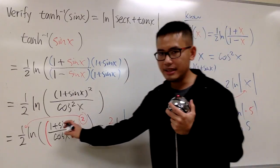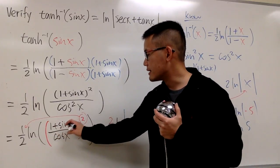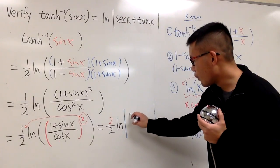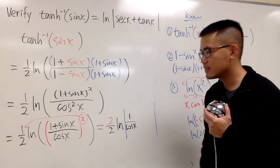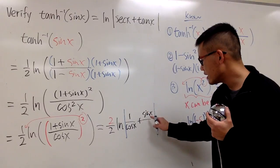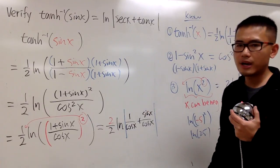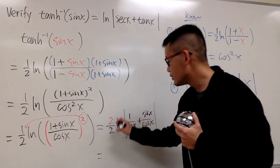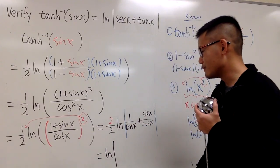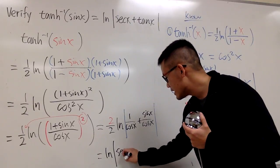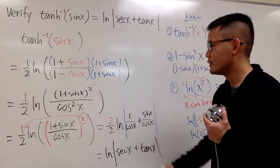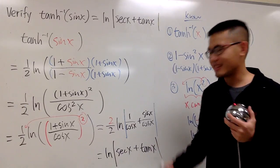Inside the absolute value we have (1 plus sin x) over cosine x, which splits into 1/cosine x plus sin x/cosine x. That gives us secant x plus tangent x. So the result is ln|secant x + tangent x|, which is exactly the right-hand side. And we are done.